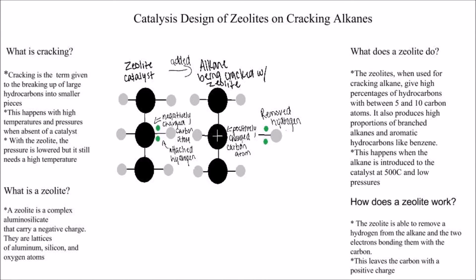The zeolite starts out with a negatively charged carbon atom and a detached hydrogen. But when added to the alkane, the hydrogen is removed and the carbon is positively charged.